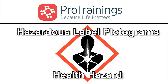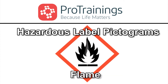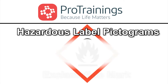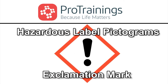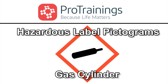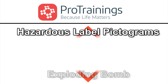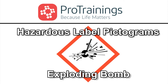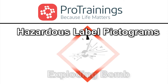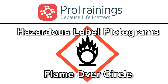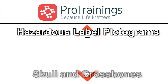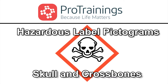OSHA's 2012 hazard communication standard requires the use of eight pictograms for hazardous labels. Under the revised hazard communication standard, each pictogram consists of a symbol on a white background framed within a red border and represents a distinct hazard. This pictogram must have the white background and red border whether the shipment is domestic or international.